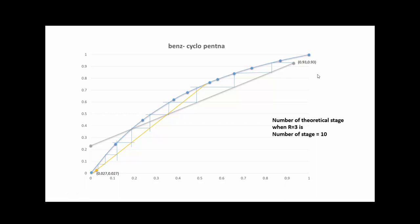To summarize the McCabe-Thiele procedure: first, perform material balances to determine the top and bottom operating line equations. Then draw both lines on the equilibrium diagram. Starting from (XD, XD), draw a horizontal line to the equilibrium curve, step down to the top operating line, and repeat. After the intersection of the two operating lines, switch to the bottom operating line. Continue until you pass XW, then count the total number of steps to get the number of theoretical stages.